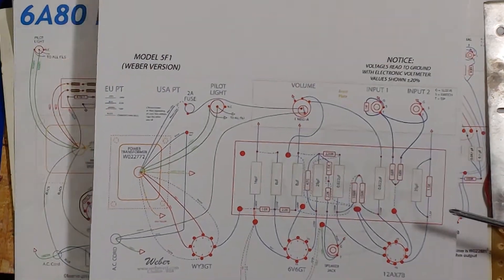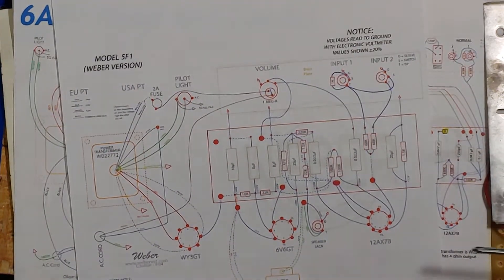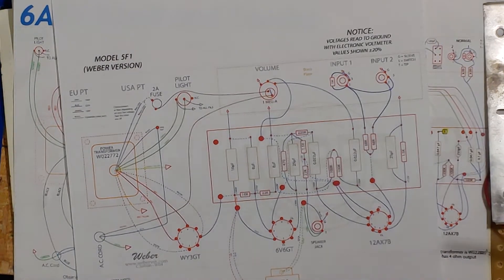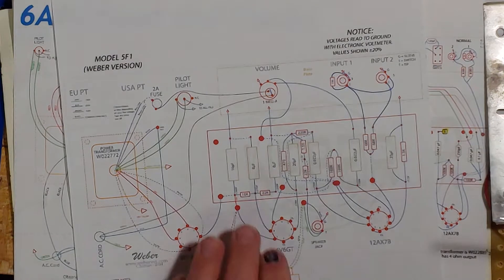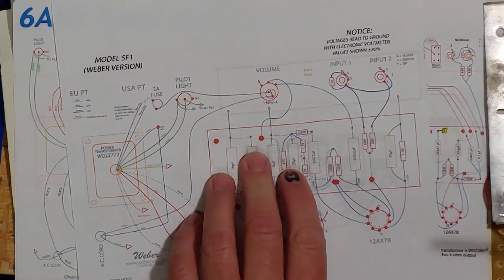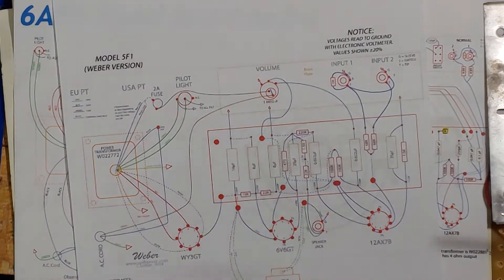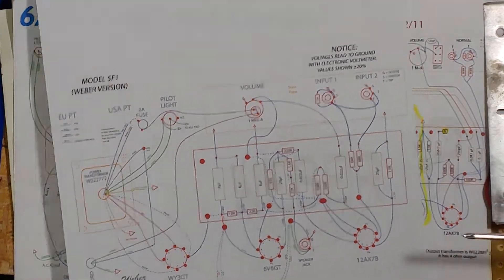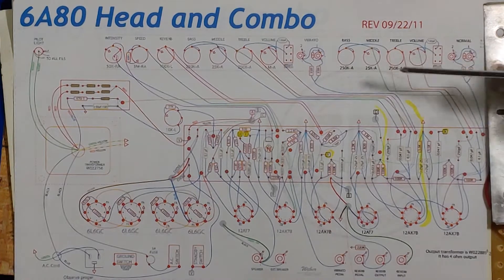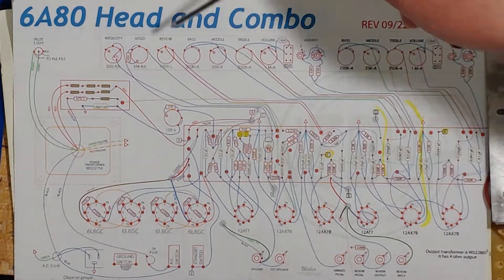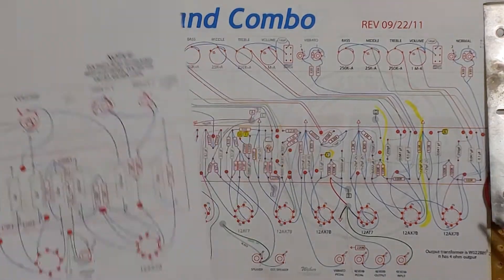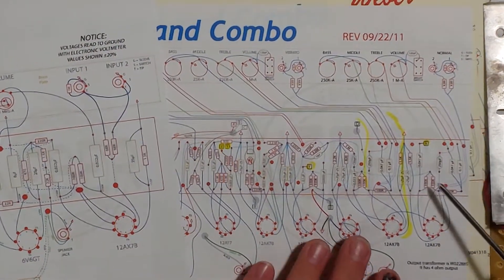Go to Ted Weber and he sells speakers and he also sells guitar kits and these schematics are his version of the original so they're clones basically. Now here's it's labeled 5F1 and then he also has the twin reverb and he calls it the 6A80, so let's go through the twin reverb schematic here or it's a wiring diagram sorry.